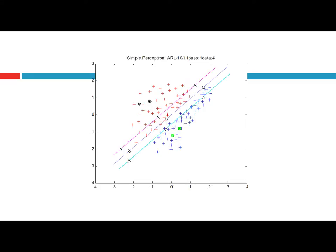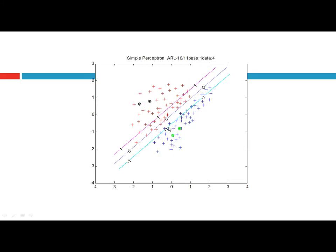This training instance — the decision boundary wrongly classifies this instance, and therefore an update is made to the decision boundary or the weight vector W. Therefore the decision boundary becomes like this. Likewise, we can use more and more training instances to adjust the decision boundary or the weight vector W. This is the case when we use six training instances.